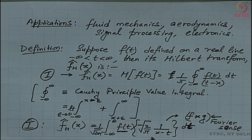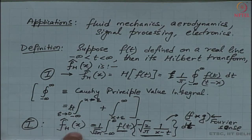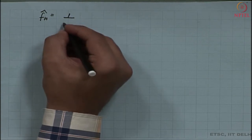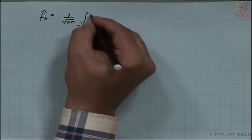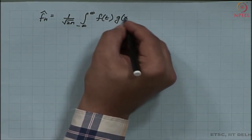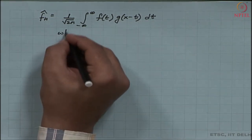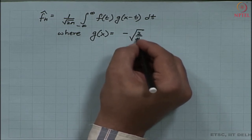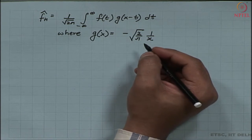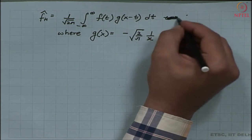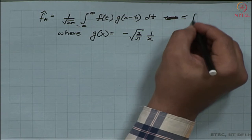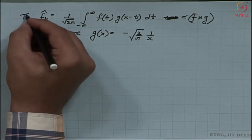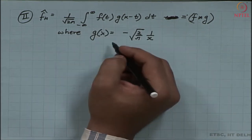My function f is the original function and g(x minus t) is the kernel. To rewrite: the Hilbert transform is the convolution integral from negative infinity to infinity of f(t) g(x minus t) dt, where g(x) equals negative sqrt(2/pi) times 1/x. This is the convolution of f star g in the Fourier sense.